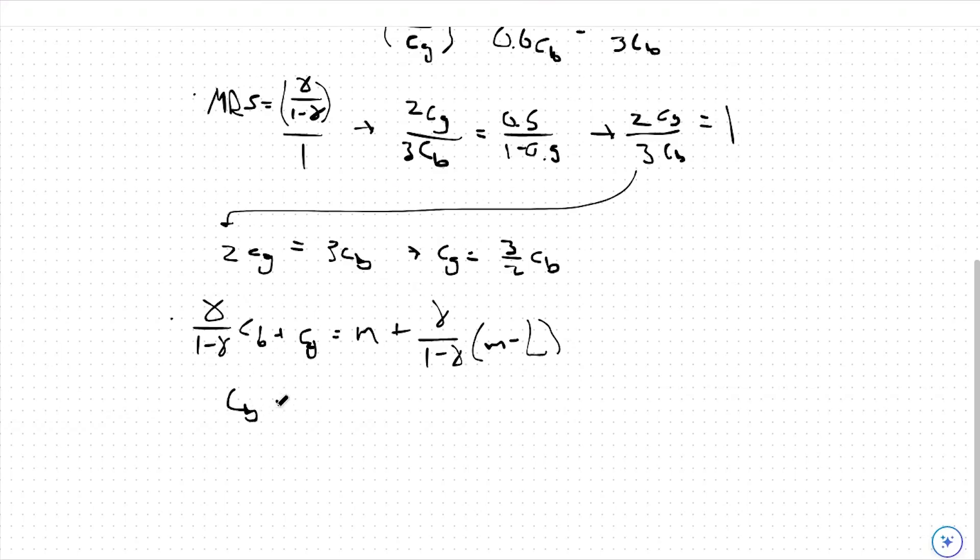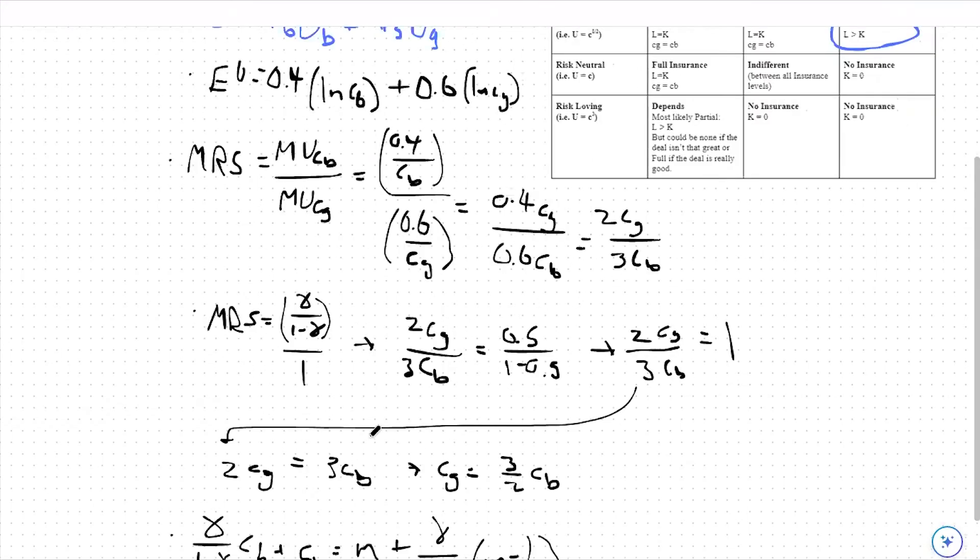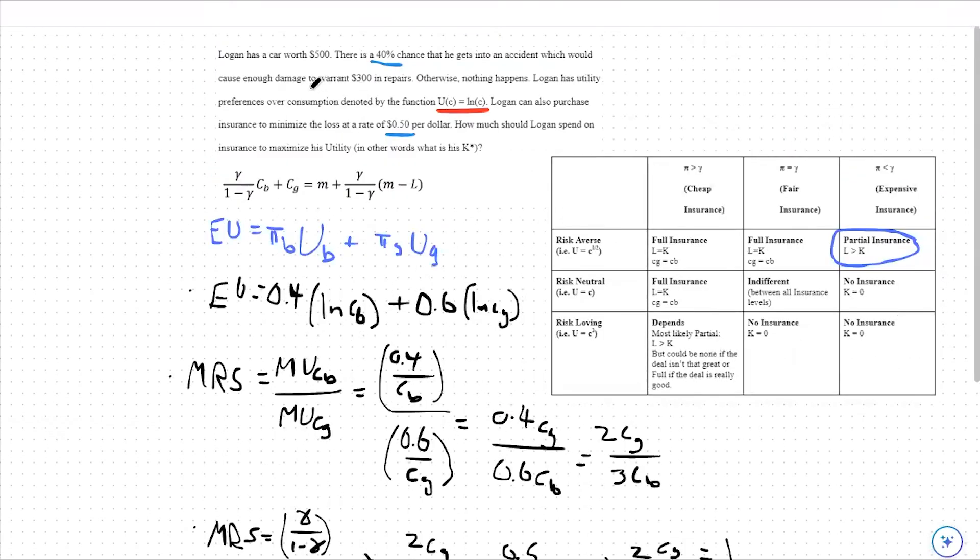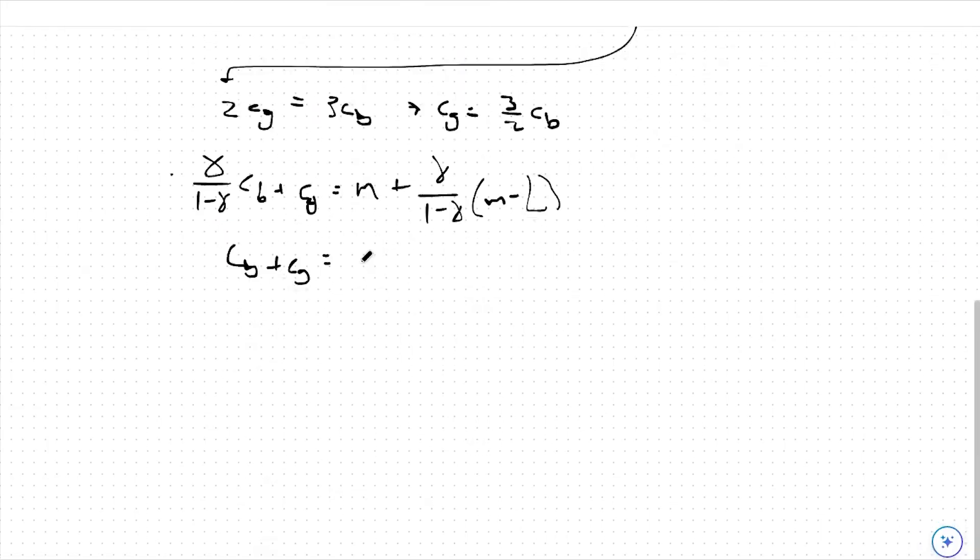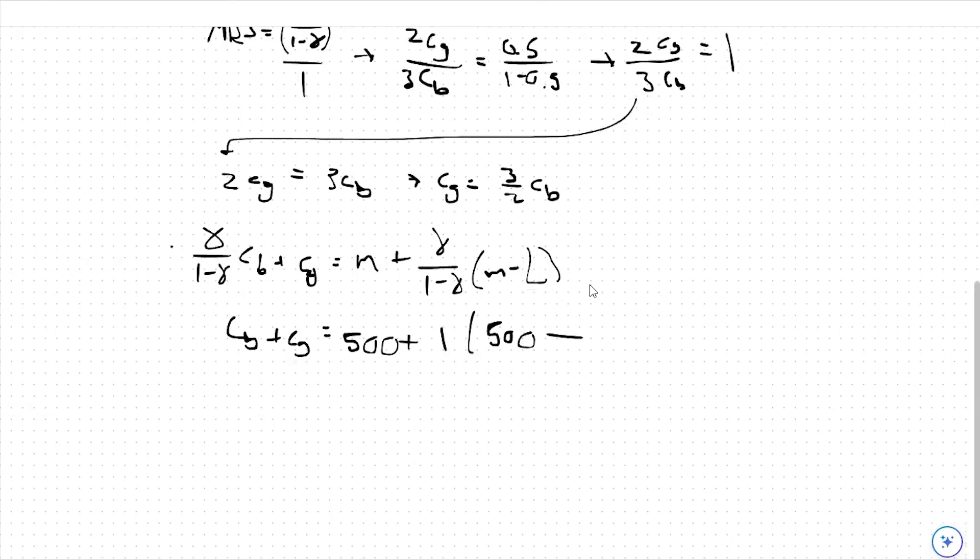So we can say CB plus CG is equal to our starting income M, which is 500. We can then add our gamma over 1 minus gamma, which is just 1, times our starting income again, which is 500, minus our loss of 300. So CB plus CG is going to equal 500 plus 200. So CB plus CG equals 700.